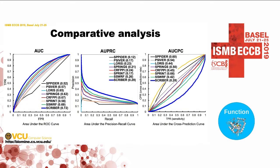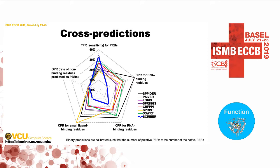These are the three types of curves: ROC curves, precision-recall curves, and the cross-prediction rates where we vary cross-prediction against sensitivity. In the last case, the smaller the area the better, because you do fewer cross-predictions. For a lot of methods in this plot, these lines are above the diagonal — which means you do more predictions of other types of binding residues than protein binding residues. Going back to the spider plot, the line in the middle is the new method. We've cleaned up small ligand binding and DNA binding. We have some trouble with RNA binding residues — they are much more difficult to differentiate — but the rate is still quite favorable, with twice as many protein binding residues predicted.